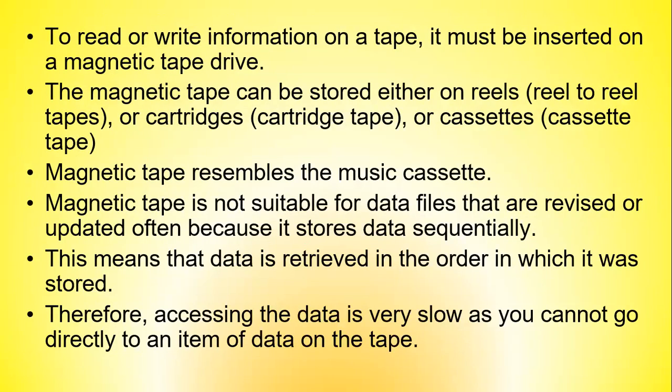In order to read or write information on a tape, it must be inserted on a magnetic tape drive. The magnetic tape can be stored on reels, in cartridges, or in the form of cassettes. The magnetic tape is not suitable for data files that are revised or updated often because it stores data sequentially, meaning data is retrieved in the order in which it was stored, making access very slow.